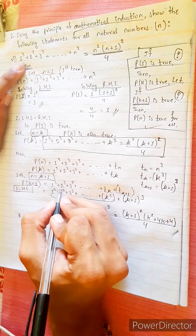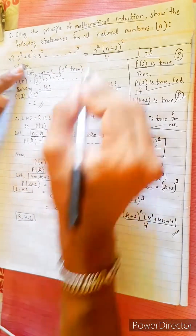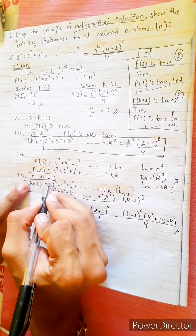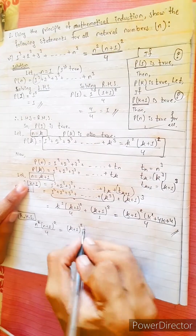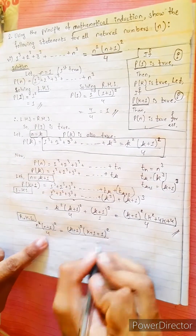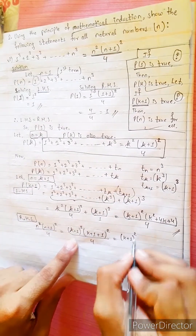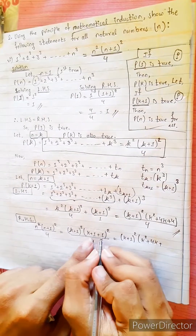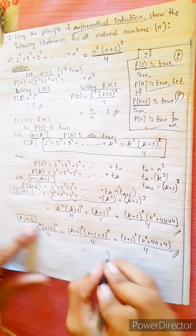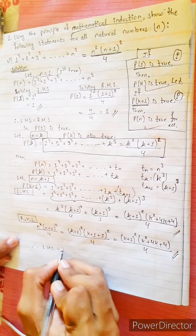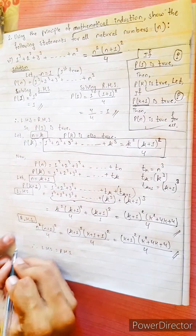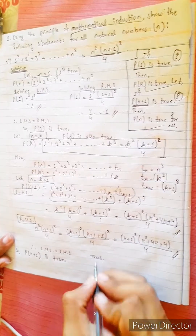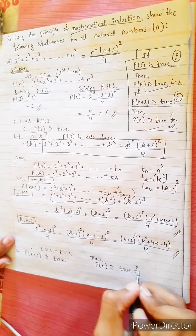This gives us 1 cubed plus 2 cubed plus 3 cubed equal to RHS. Therefore p(n) is true for all natural numbers.